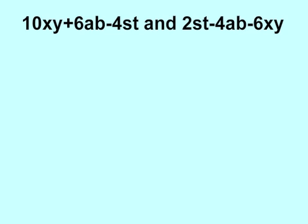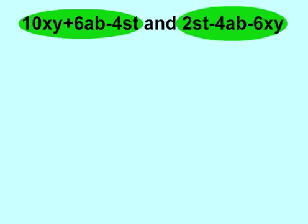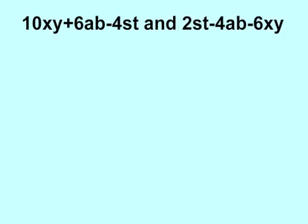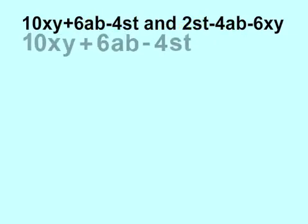We are asked to add 10xy plus 6ab minus 4st and 2st minus 4ab minus 6xy. To add these two expressions, we need to rearrange them so that similar terms are in the same columns. Let's rewrite our first expression.